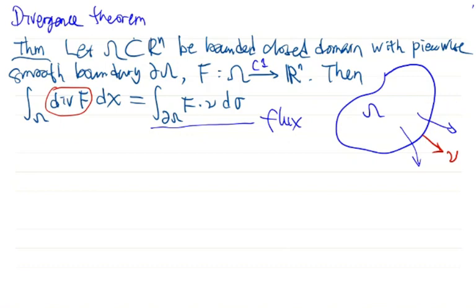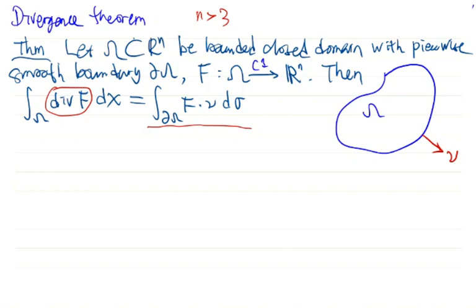This is very useful and very important. We will prove this later. I remind you that when n is greater than 3, ω is a domain in a higher-dimensional space, and the boundary is a higher-dimensional surface. So the statement of the divergence theorem involves integrals over higher-dimensional surfaces, which is a new concept we will discuss later.